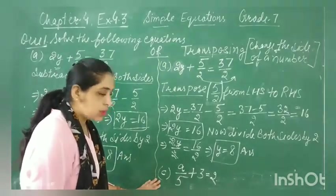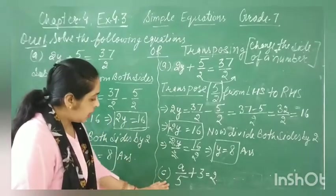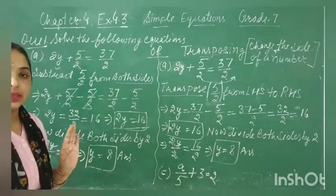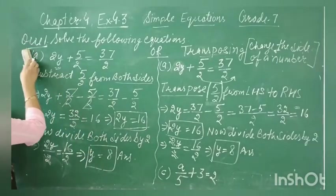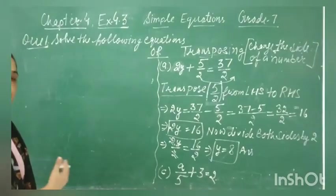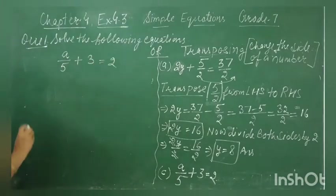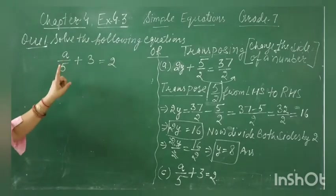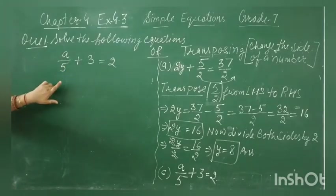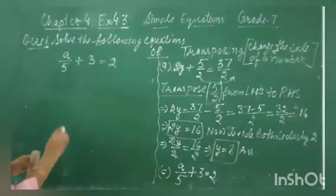Now let us solve part C of the question using only the transposing method. The question is: A divided by 5 plus 3 is equal to 2. We have to solve the equation — the purpose is to eliminate both constants from the left hand side so that only the variable remains, while balancing changes happen on the right hand side as well.